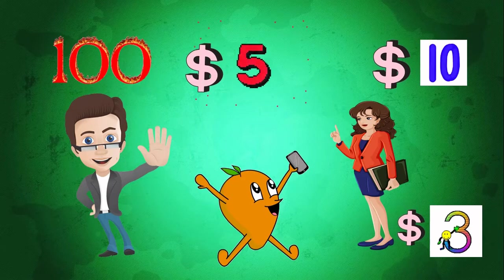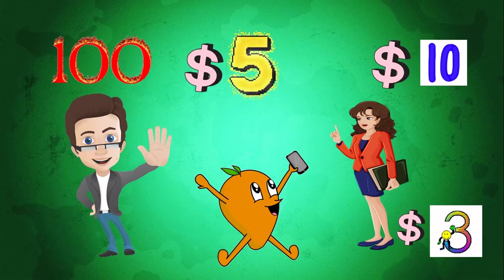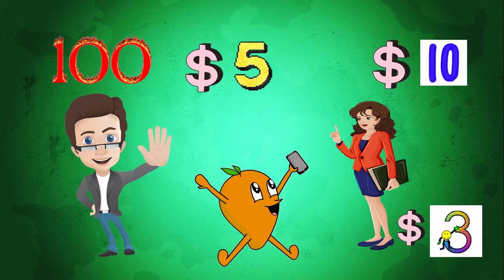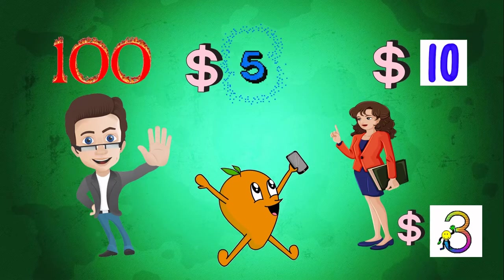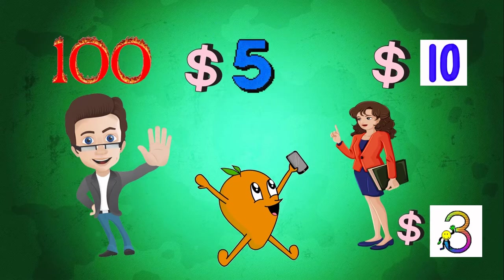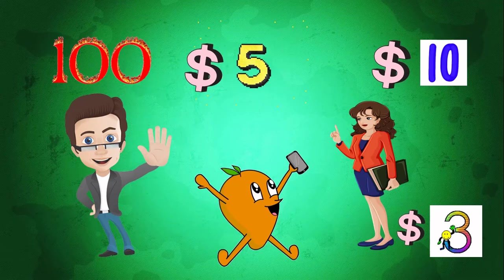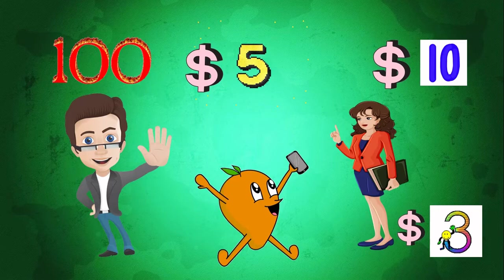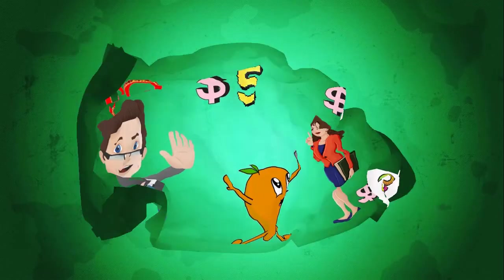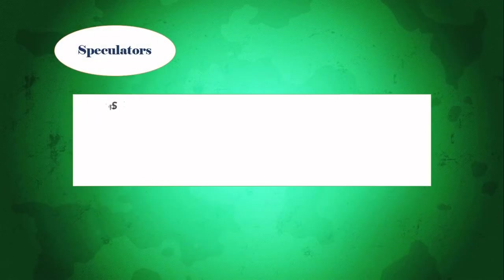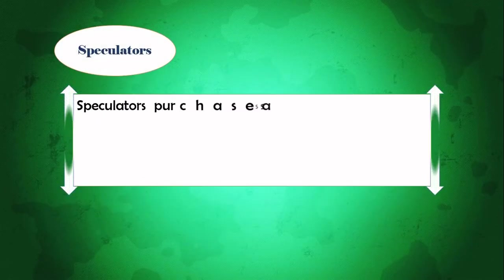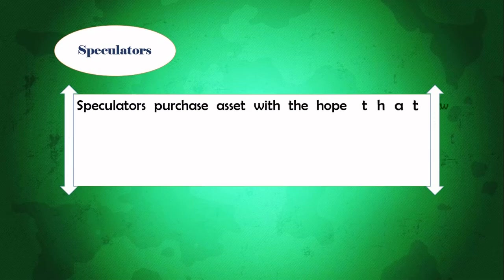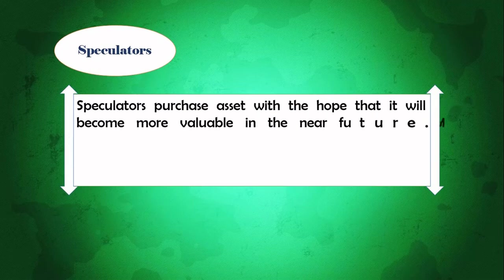So Ish is making a deal with Lita that after two months, Lita will sell 100 kilos of mangoes to Ish at $5 per kilo. Being a hedger, Ish is minimizing the risk of future price volatility instead of thinking of making profit.